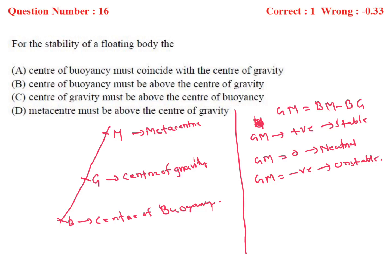Checking the options for floating body stability: Option A — center of buoyancy must coincide with center of gravity — this is the condition for neutral equilibrium, not general stability, so incorrect. Option B — center of buoyancy must be above center of gravity — also not correct. Option C — center of gravity must be above center of buoyancy — metacenter is not mentioned, so also not possible. Option D — metacenter must be above center of gravity (GM positive) — this is the correct condition for stability of a floating body.